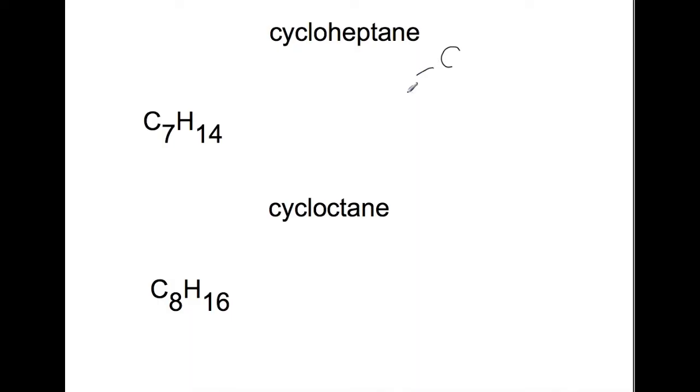Cycloheptane has seven carbons, which is quite hard to draw. Cyclooctane has eight carbons, which is the last one that you need to know.